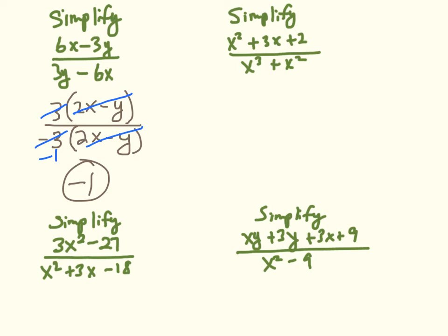I should warn you: in the homework there are about 3 problems where you could do a little factoring but there are no common factors. When you run into a situation where there are no common factors in the numerator and denominator, you just say it's simplified already — no canceling can occur.